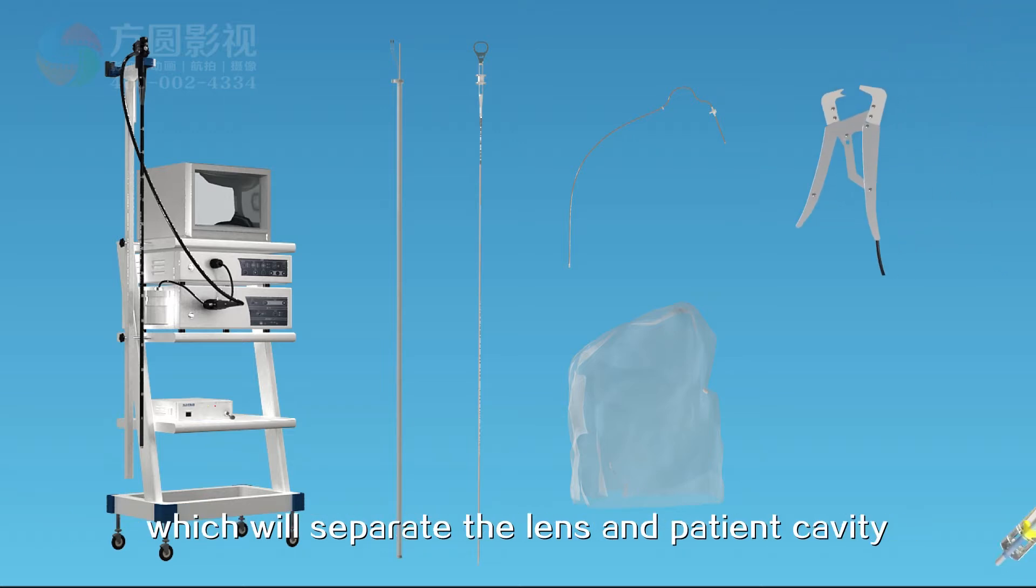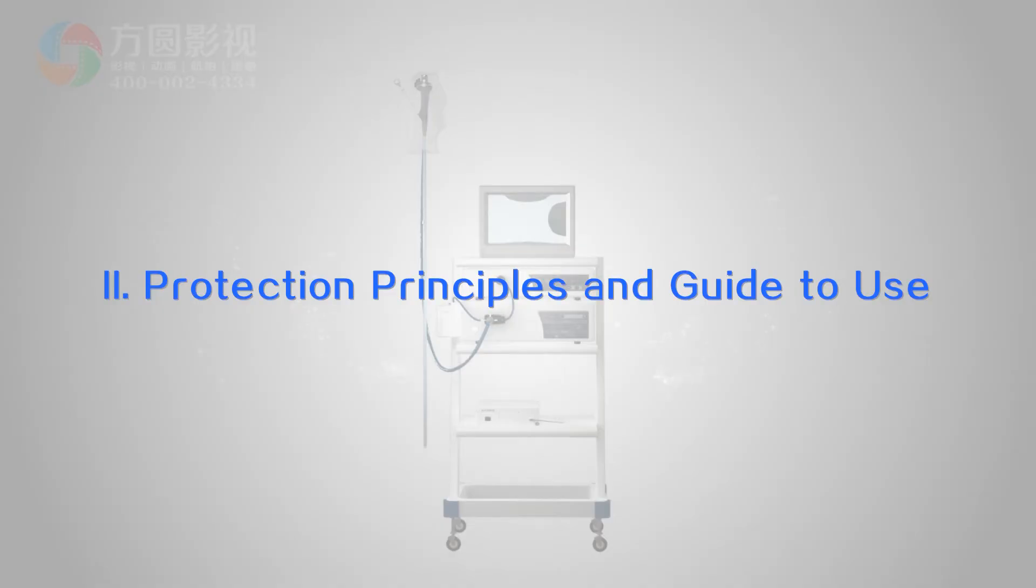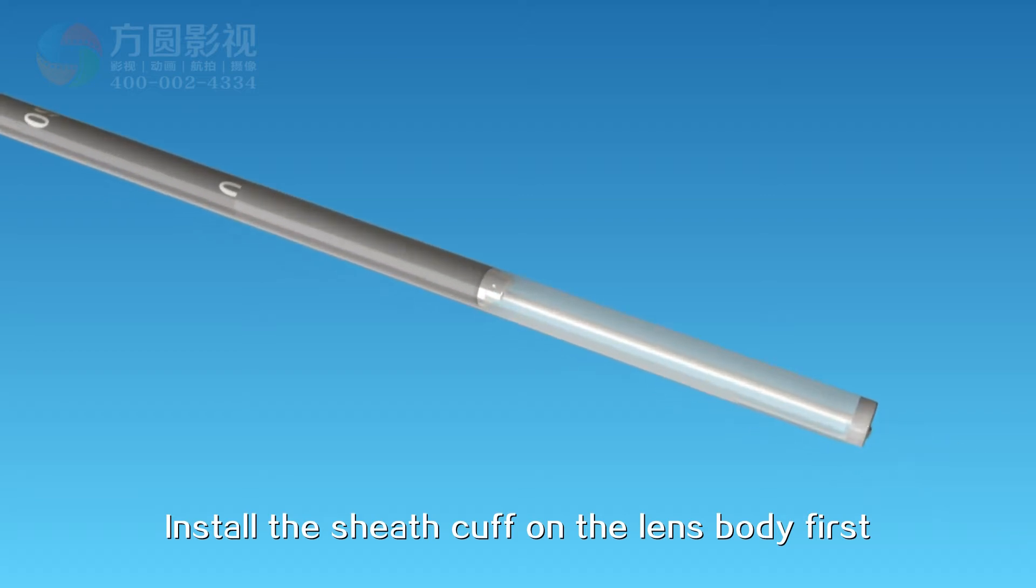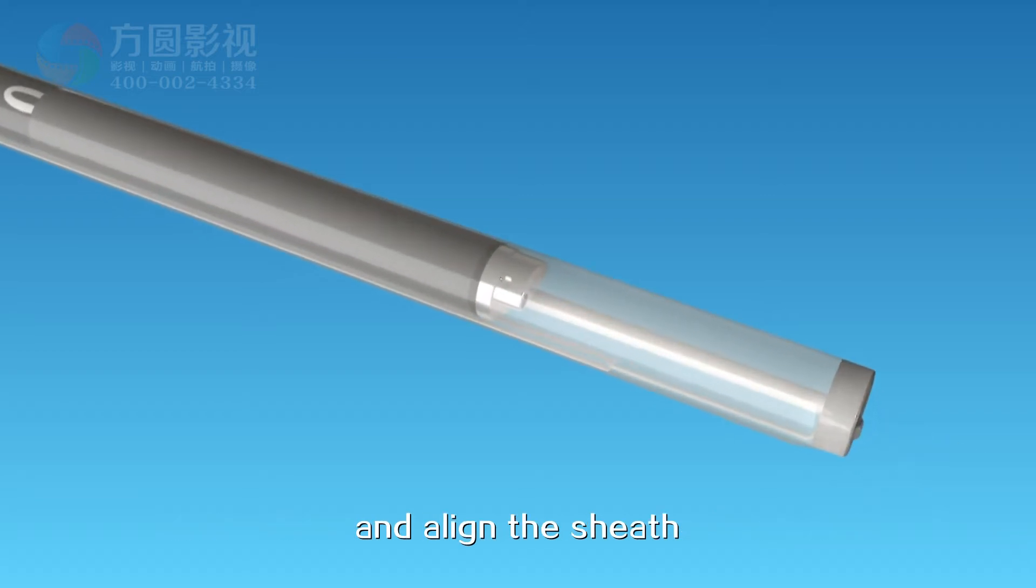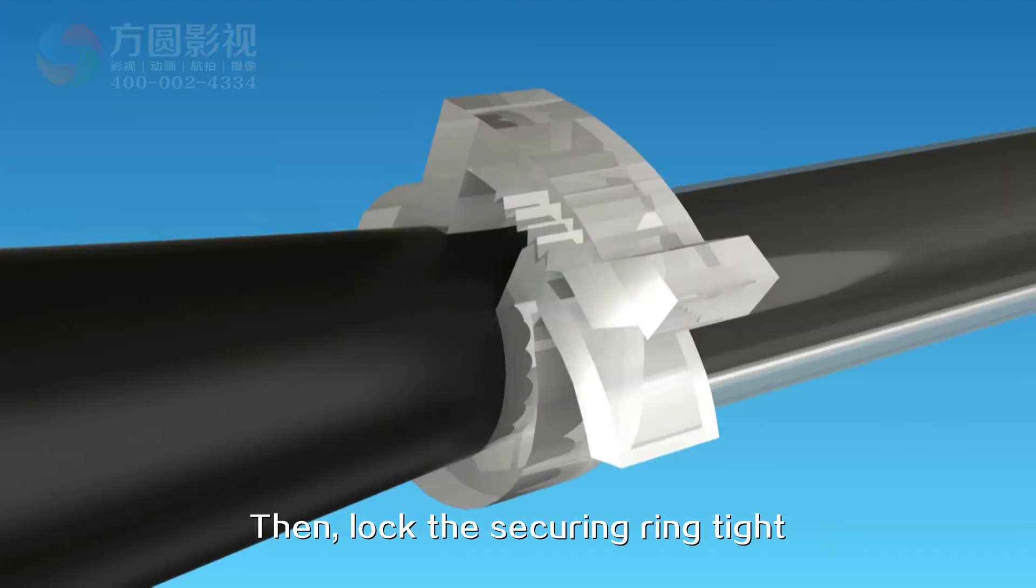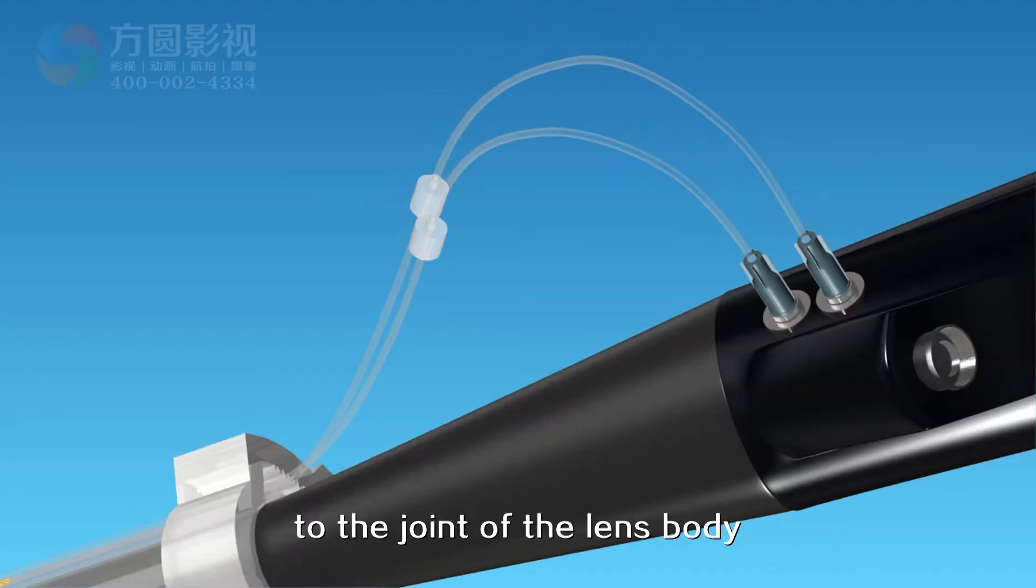The device will separate the lens and patient cavity and be discarded after use. The product has the same effect as disposable endoscopy. Install the sheath cuff on the lens body first and align the sheath end and lens head of the endoscopy, then lock the securing ring tight. Connect the water air tube head to the joint of the lens body.